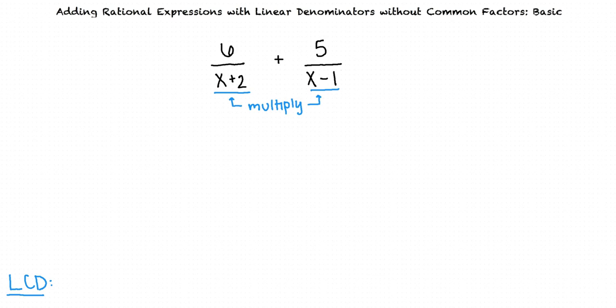When we multiply x plus 2 times x minus 1, this results in a least common denominator of the quantity x plus 2 times the quantity x minus 1. How do we manipulate our fractions so that they have that denominator?